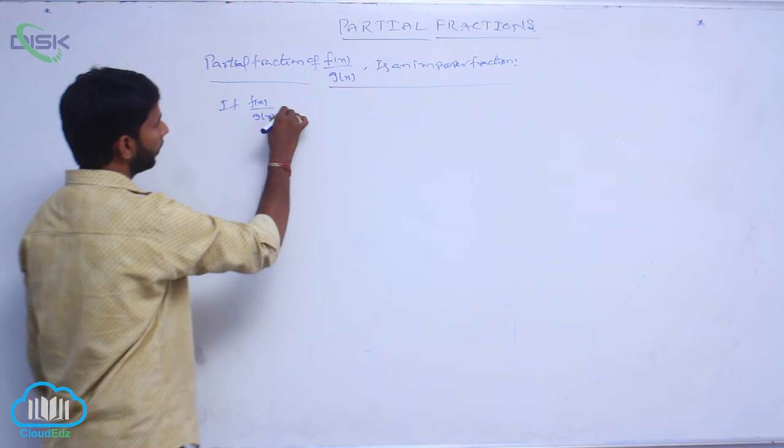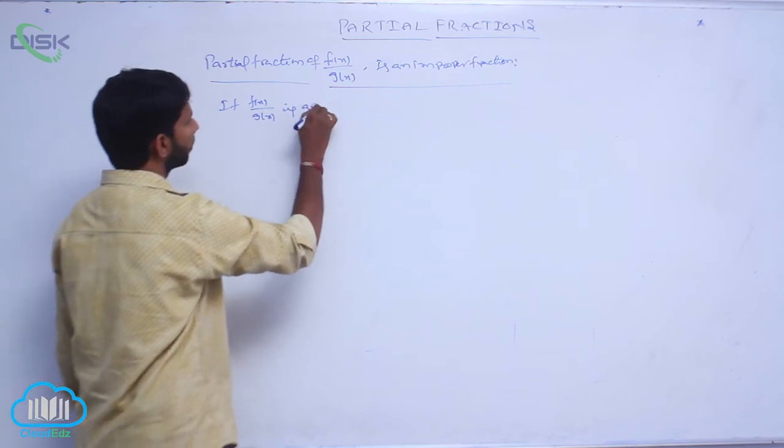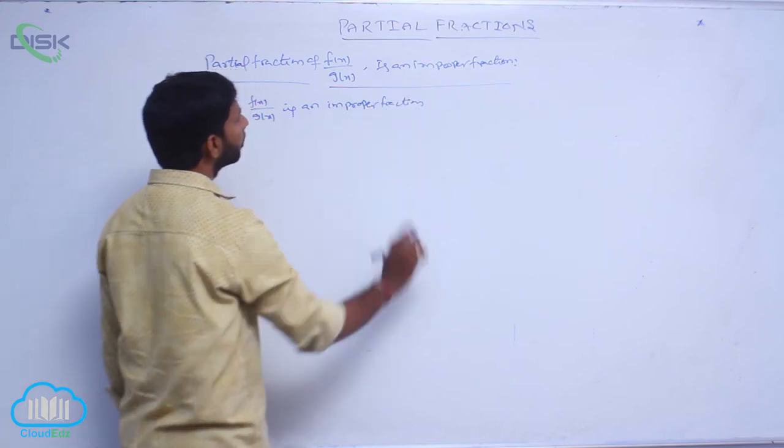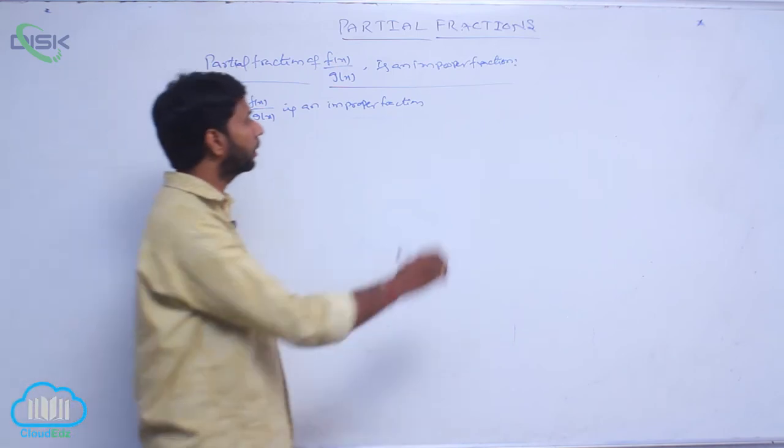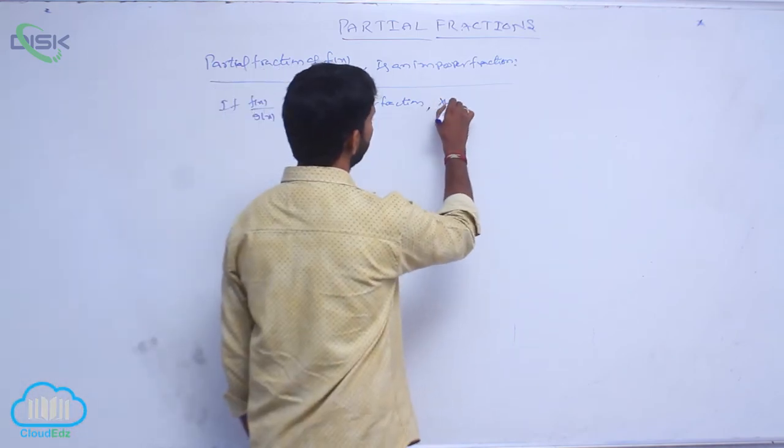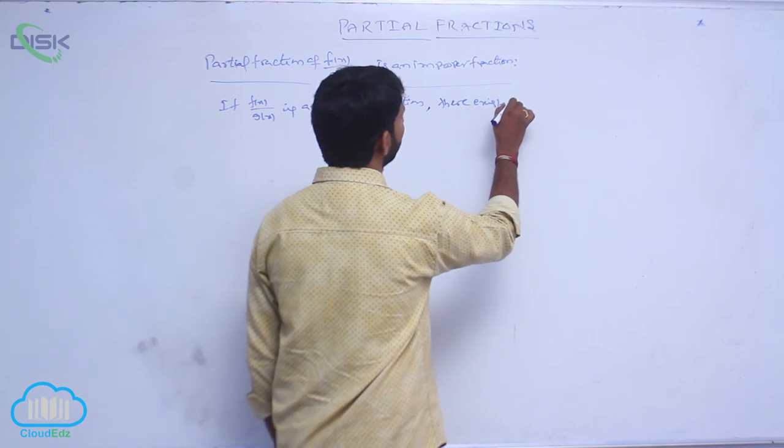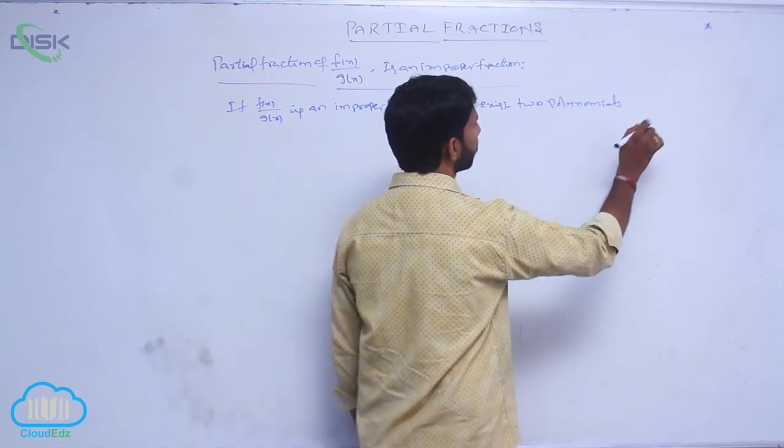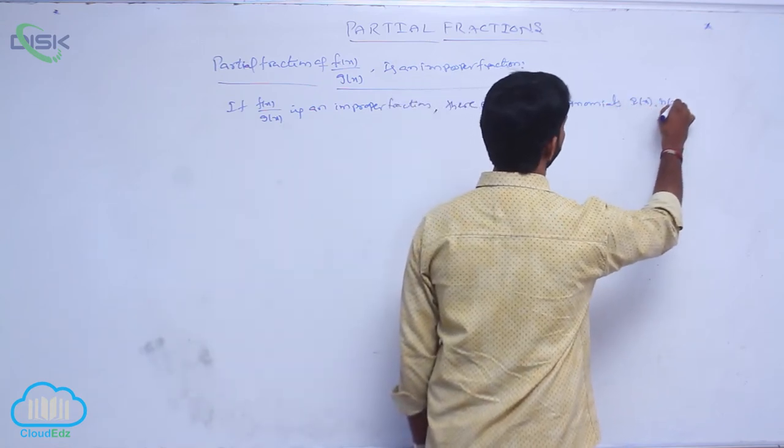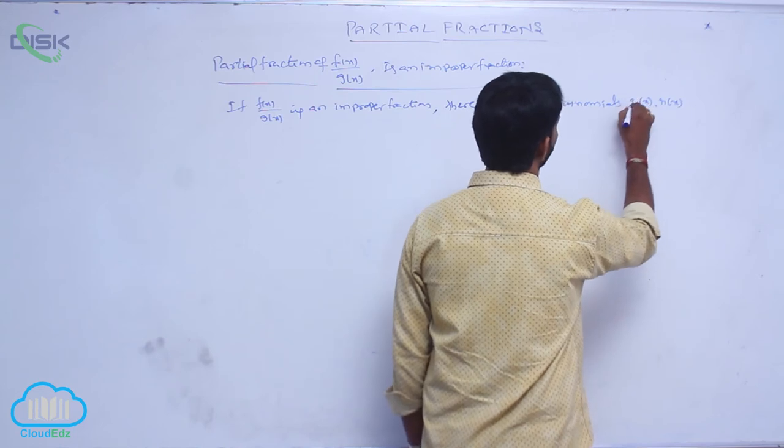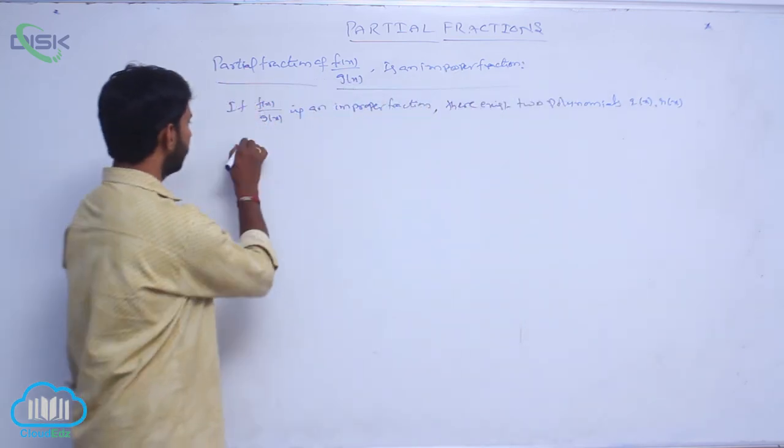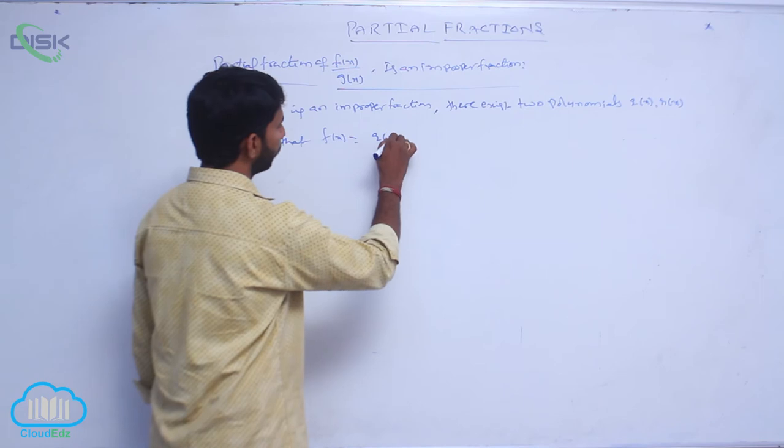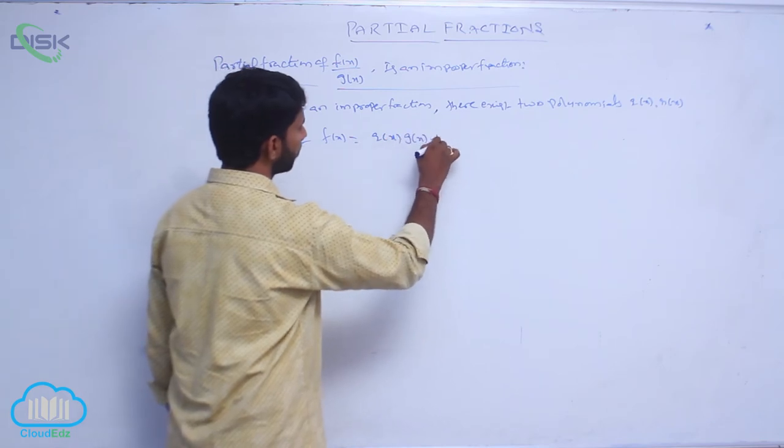If f(x)/g(x) is an improper fraction, there exist two polynomials q(x) and r(x) such that f(x) is equal to q(x) into g(x) plus r(x).